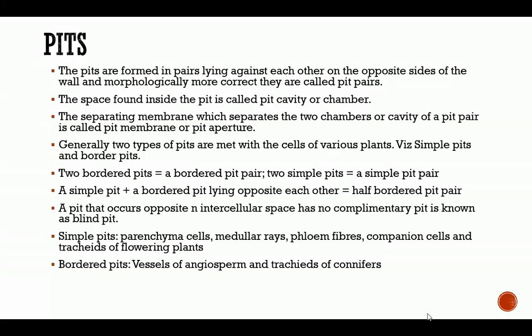Generally, two types of pits are found in the cells of various plants: simple pits and bordered pits. Two bordered pits facing each other form a bordered pit pair; two simple pits form a simple pit pair. A simple pit and a bordered pit opposite each other form a half-bordered pit pair. A pit that occurs opposite an intercellular space — where instead of having an opposite pit in the adjacent primary cell wall we have only an intercellular space — is referred to as a blind pit.